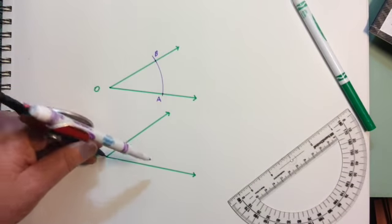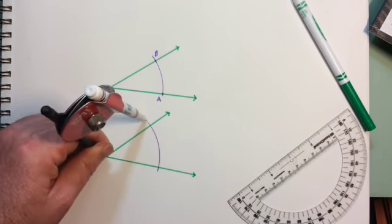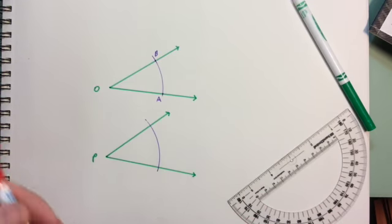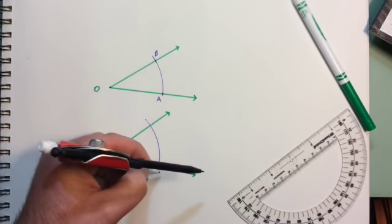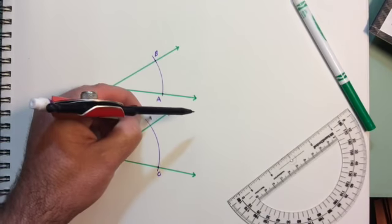Using the same distance, I am going to make an arc through the second angle, and we are going to label this point C and this point D.